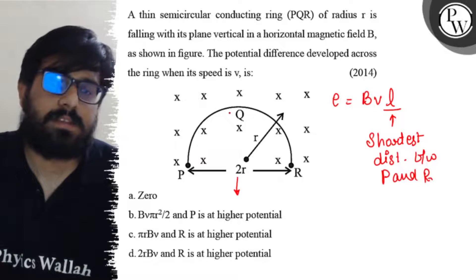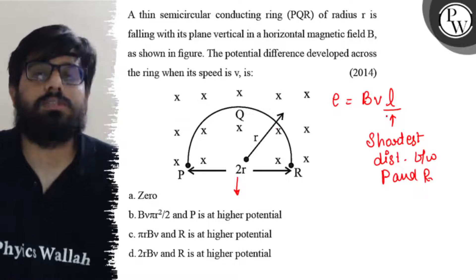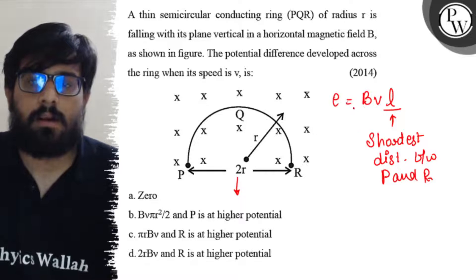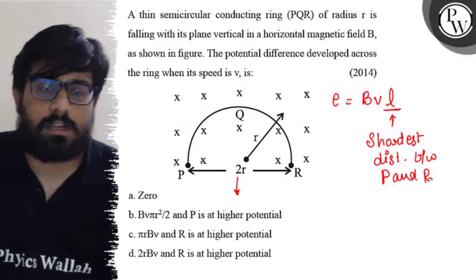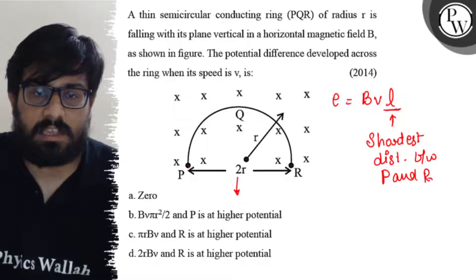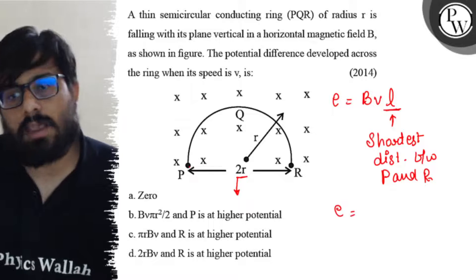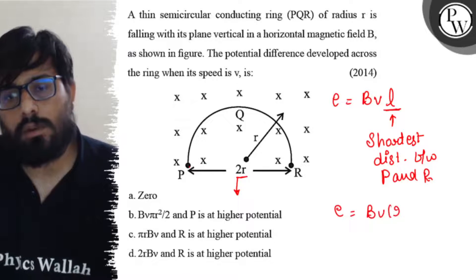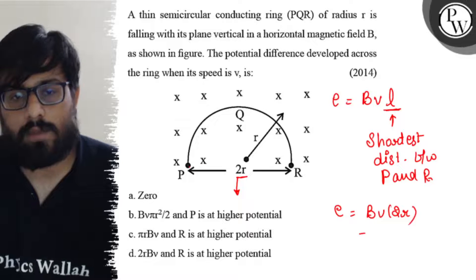When you have a semicircular arc, you can solve this question by this method. E = BVL, where L is the shortest distance between P and R, which equals 2r. So the induced EMF is 2rBV.